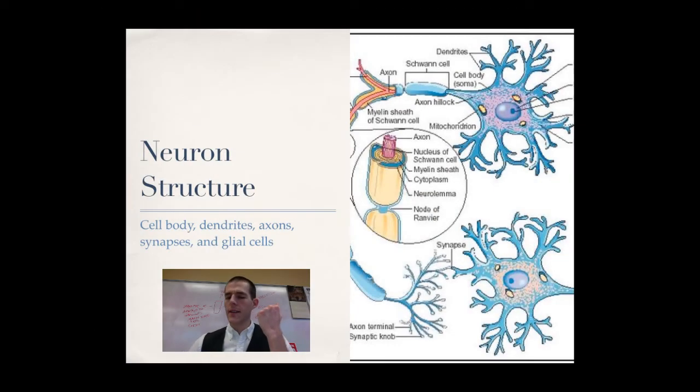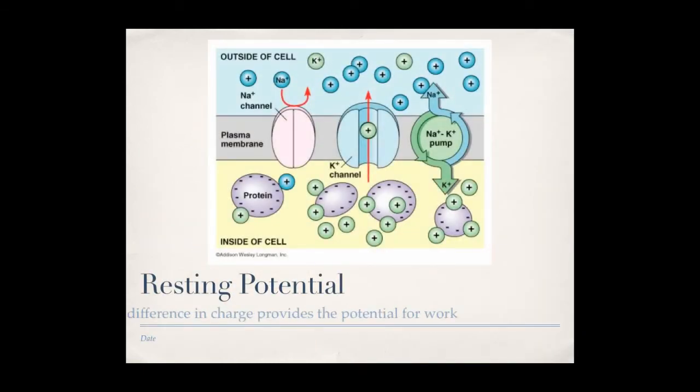Hey, sorry for that edit in there. I got my notes a little bit out of order. So now that we've talked a little bit about the neuron structure, let's go ahead and talk about what a neuron is up to when it is at rest. And while a neuron is at rest, it has something called resting potential.